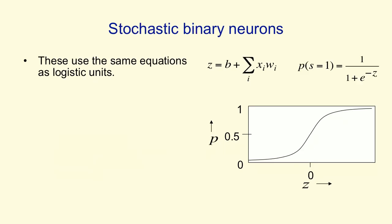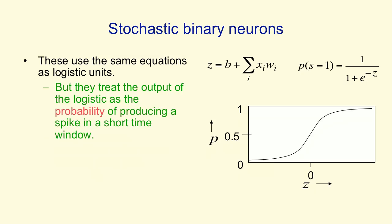Finally, the stochastic binary neurons. They use just the same equations as logistic units. They compute their total input the same way, and they use the logistic function to compute a real value, which is the probability that they would output a spike. But then instead of outputting that probability as a real number, they actually make a probabilistic decision, and so what they actually output is either a 1 or a 0. They're intrinsically random.